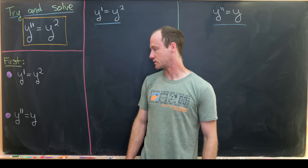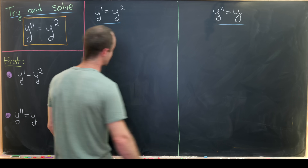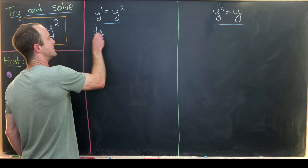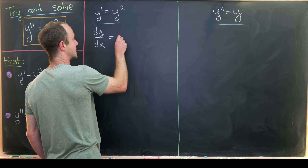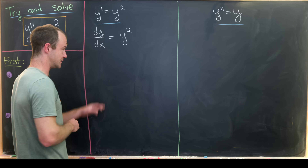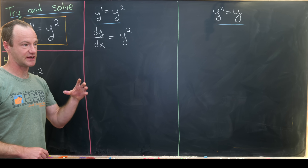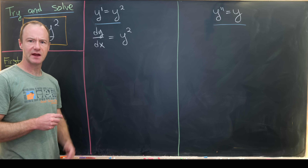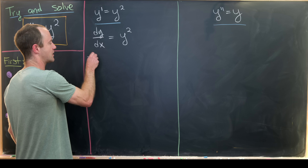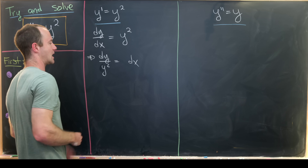The first one will be y prime equals y squared, and the second one will be y double prime equals y. For the first one, y prime equals y squared, we can use a so-called separation of variables technique. We take dy/dx to be equal to y squared, rewriting this with Leibniz notation, and then we abuse that notation to split the differentials dy and dx, moving all the x parts to one side while we move all the y parts to the other. That gives us dy over y squared equals dx.